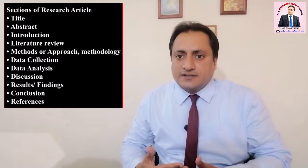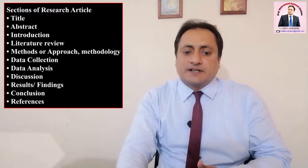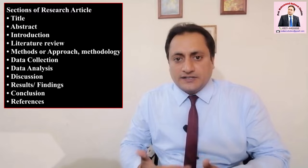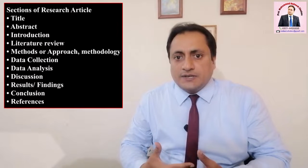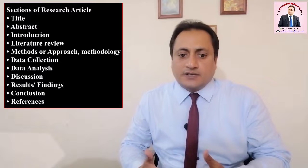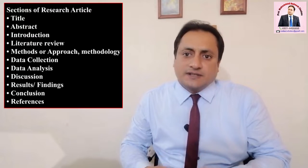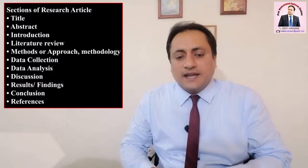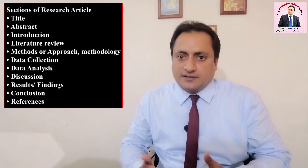Now we are moving towards the sections of a research article. The very first thing in the research article is its title. The title is basically the face of the article. Then comes the abstract, which is basically the skeleton, the outline, or the map of the research project or research article.